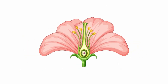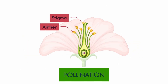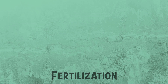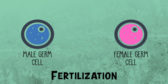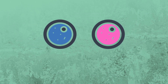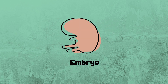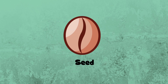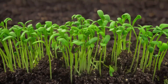The transfer of pollen from the anther to the stigma of the flower is called pollination. During fertilization, the male and female germ cells of the pollen unite to form a zygote. A zygote then transforms into an embryo, which eventually becomes a seed. The seed then germinates into a new plant.